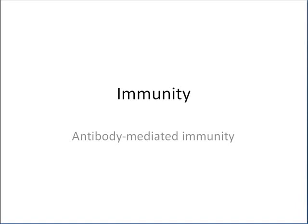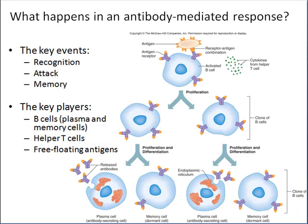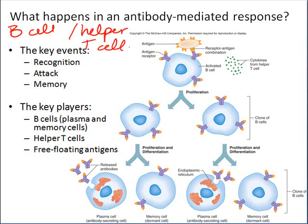Comparing the cell-mediated immune response with the antibody-mediated immune response is really helpful because it helps you see where they differ from one another and what key roles each of these two specific immune responses play. In antibody-mediated immunity the key player is the B cell — that is by far and away the most critical player — but we also have to have helper T cells involved to confirm that there really is an infection or a problem.